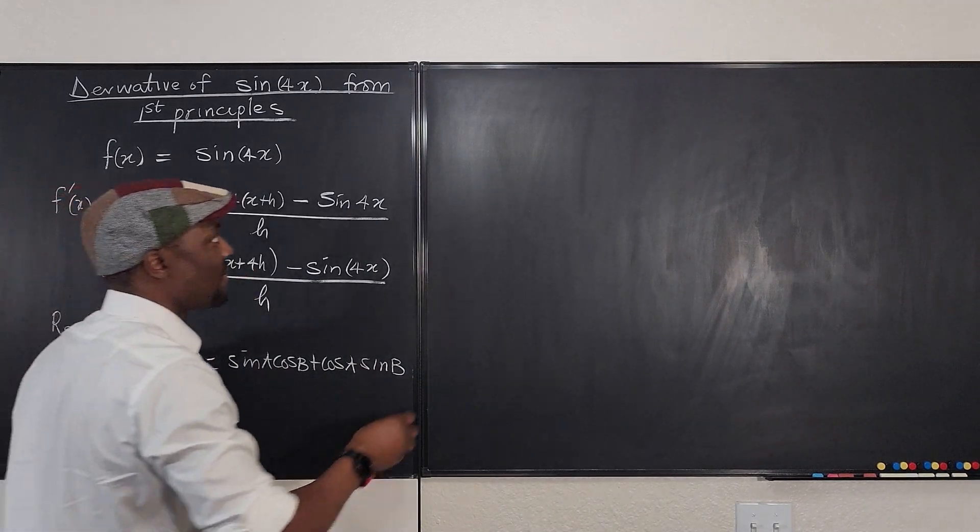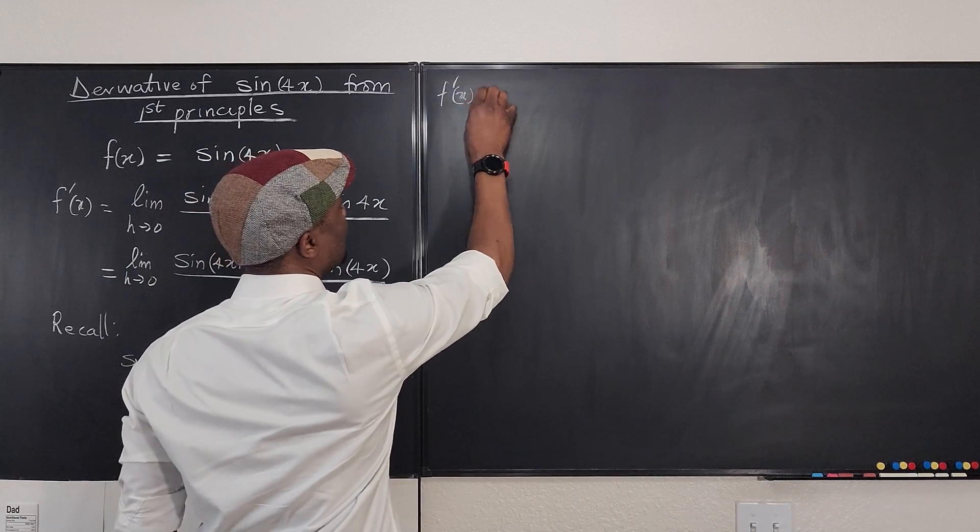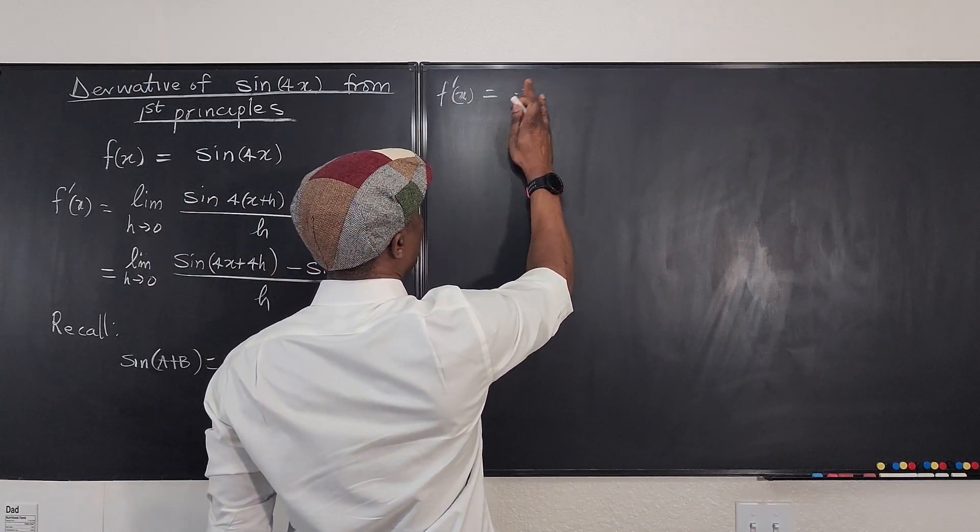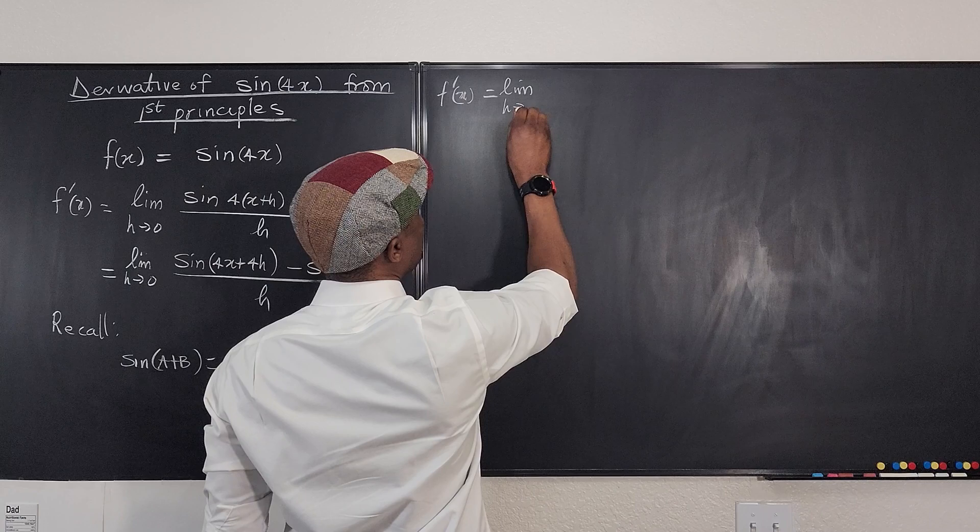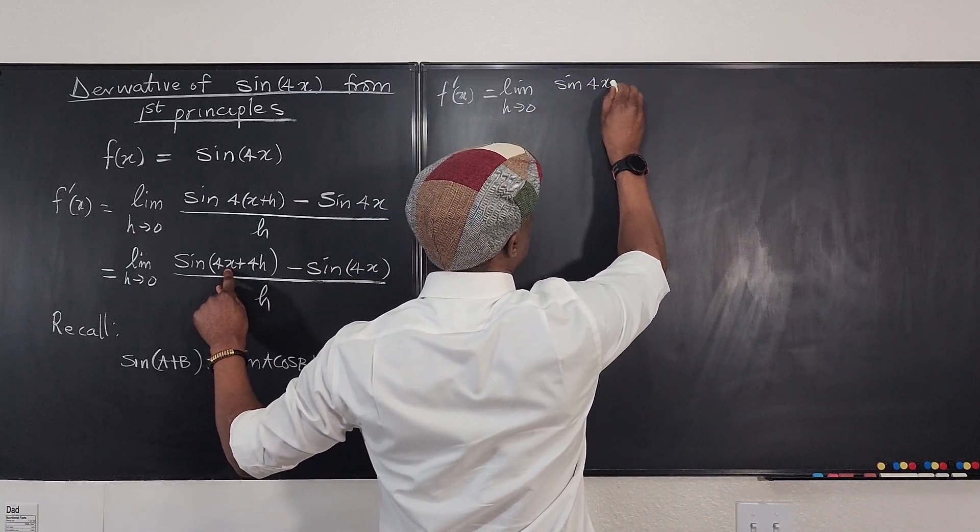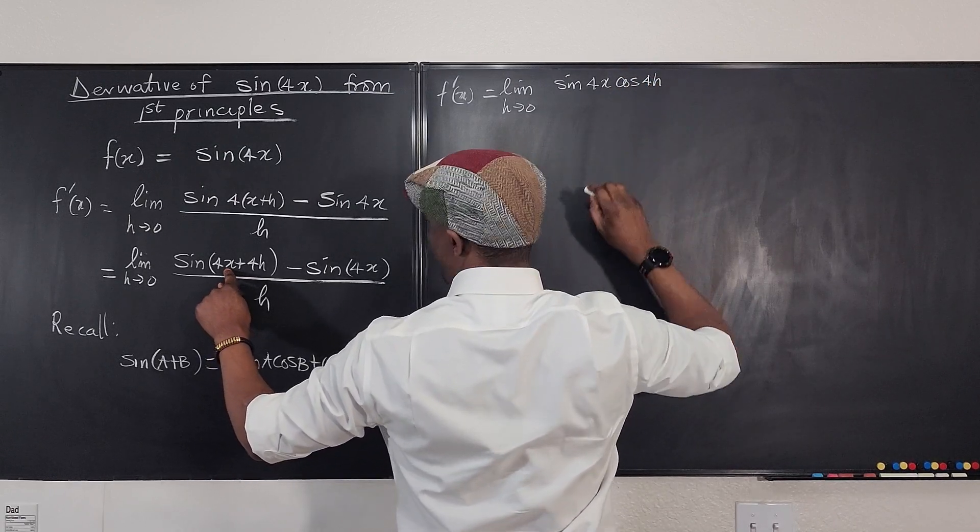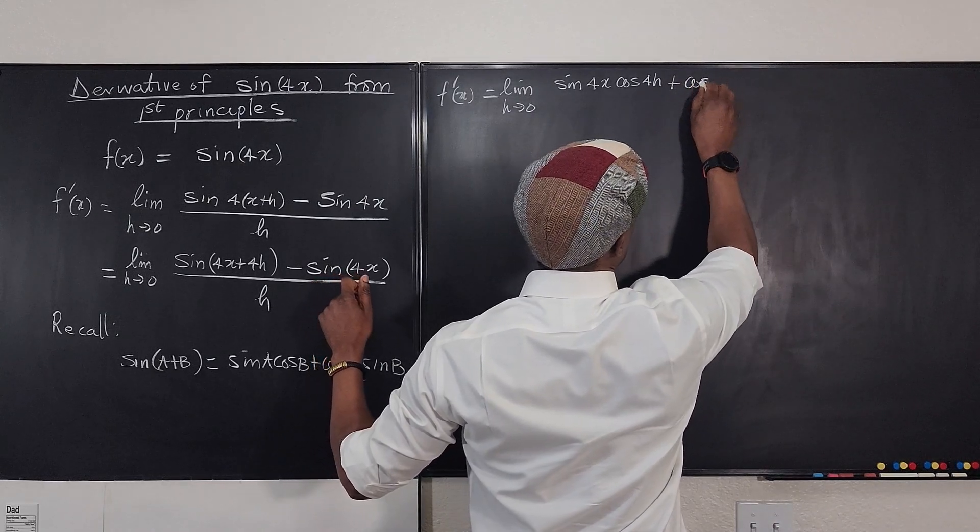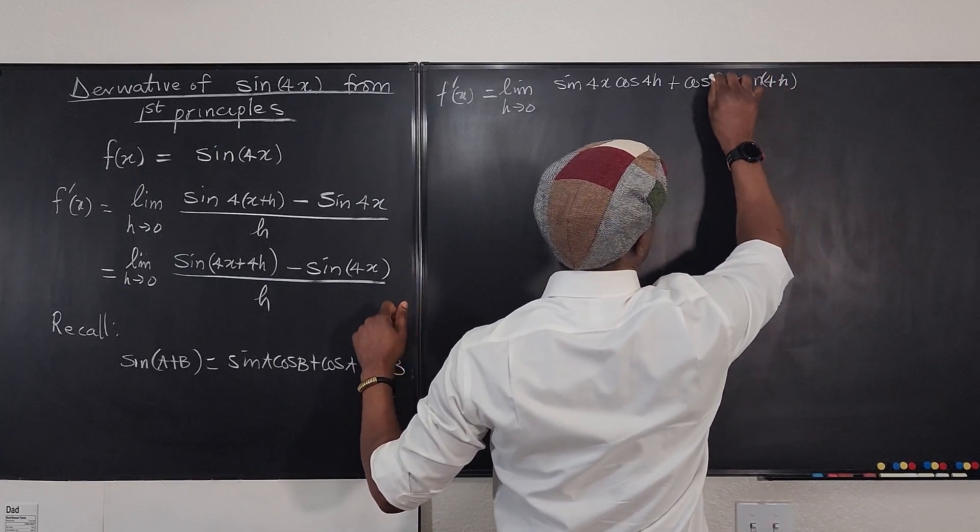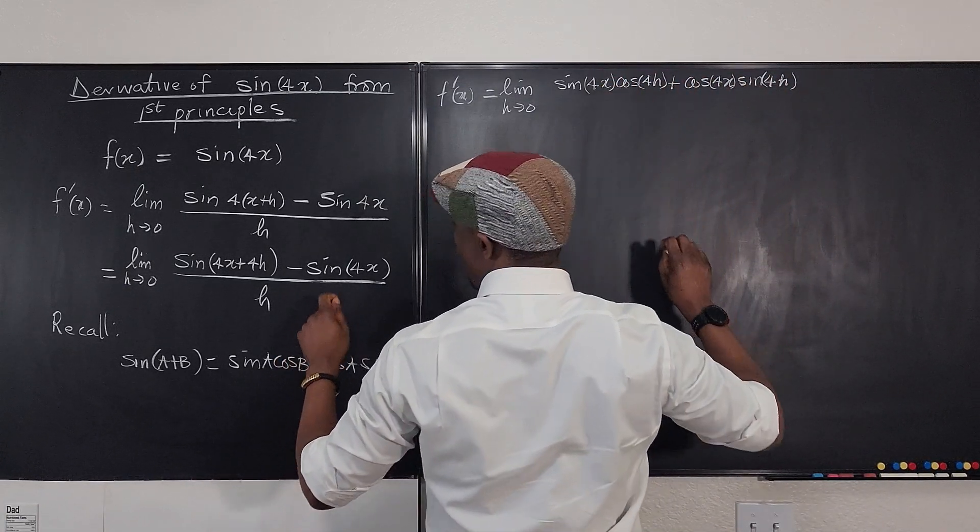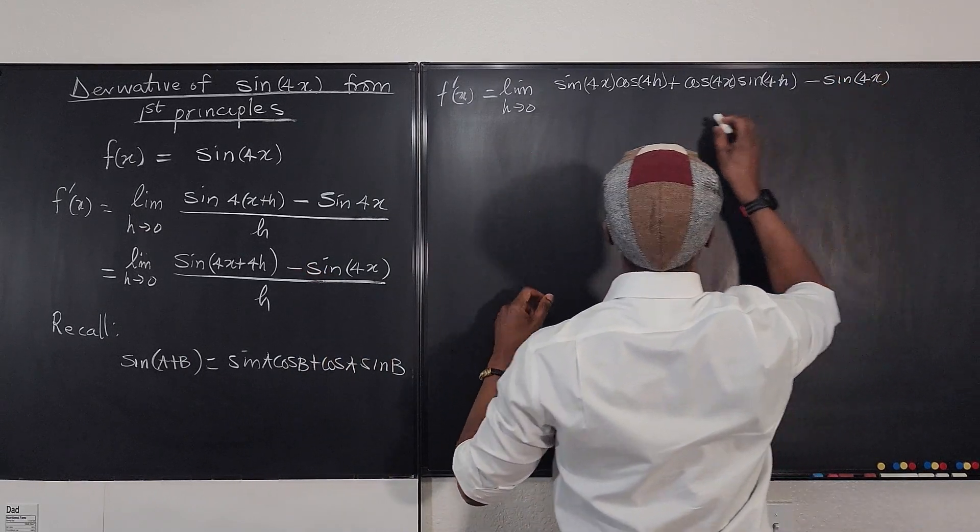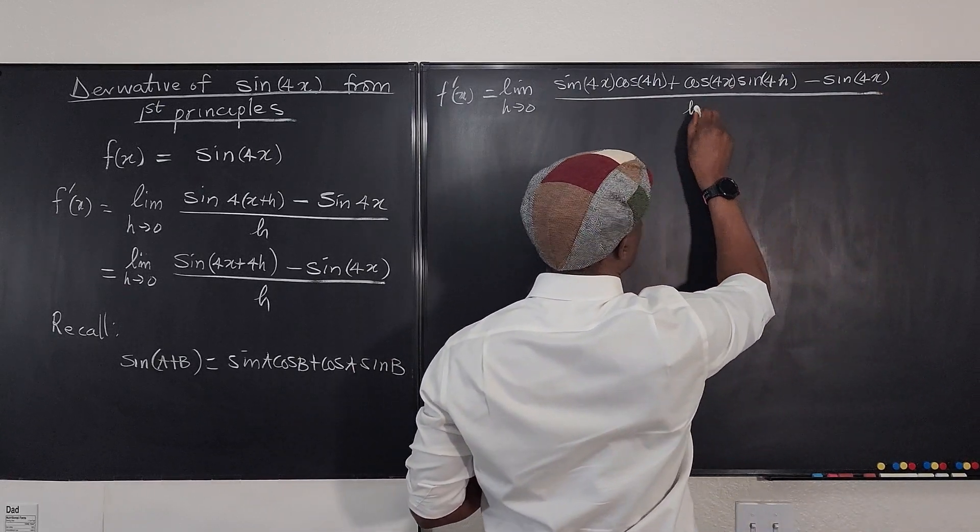So I'm going to expand this and say that f'(x) will be equal to, or apply this to this, it's going to be equal to, it's going to be the limit as h goes to 0 of sin(4x)cos(4h), plus cos(4x)sin(4h). Let's put this in parenthesis each time, and then we go here minus sin(4x), all divided by h. Nice.